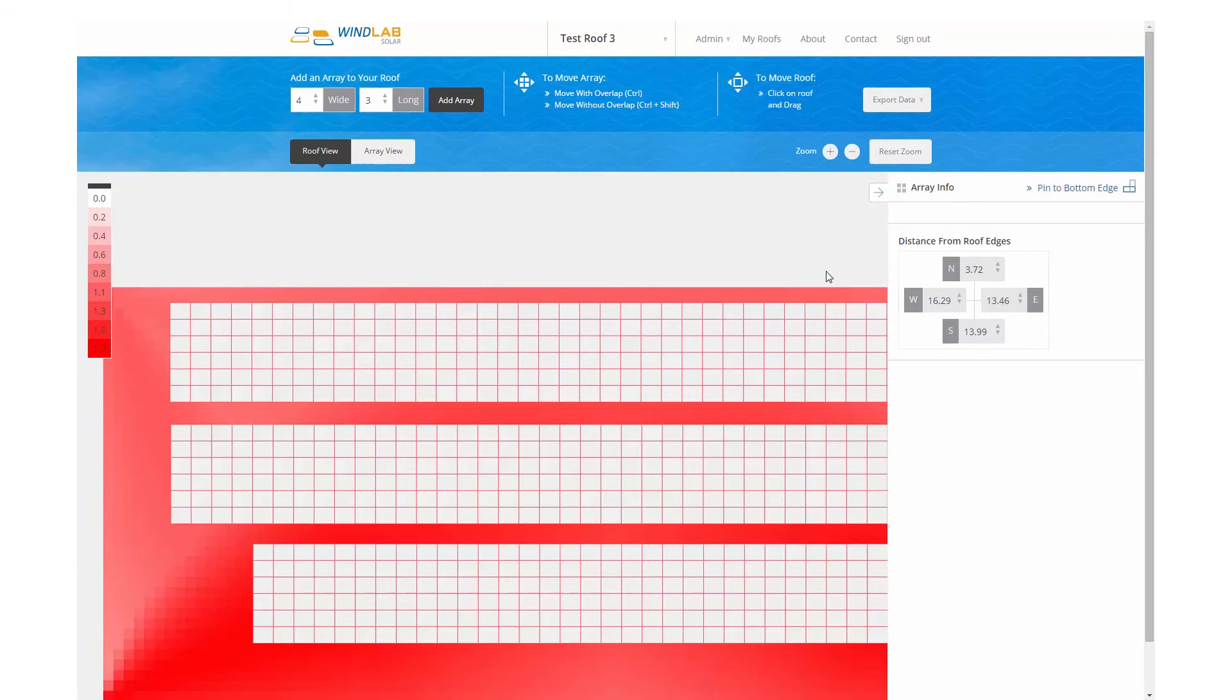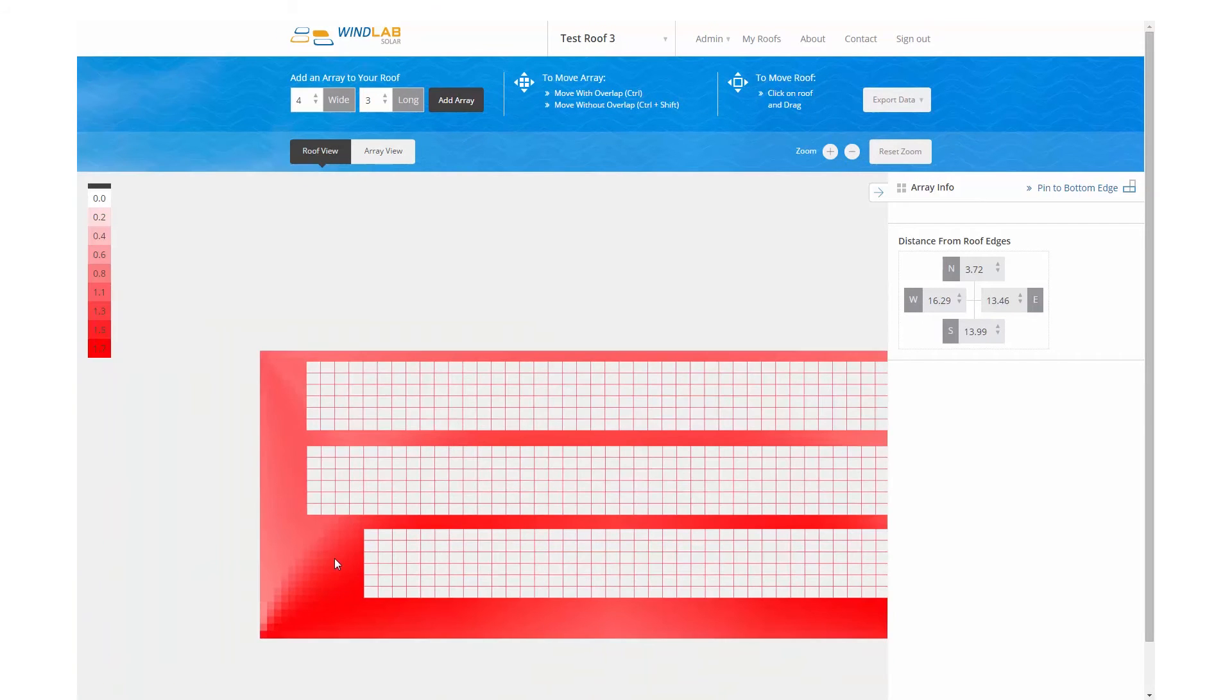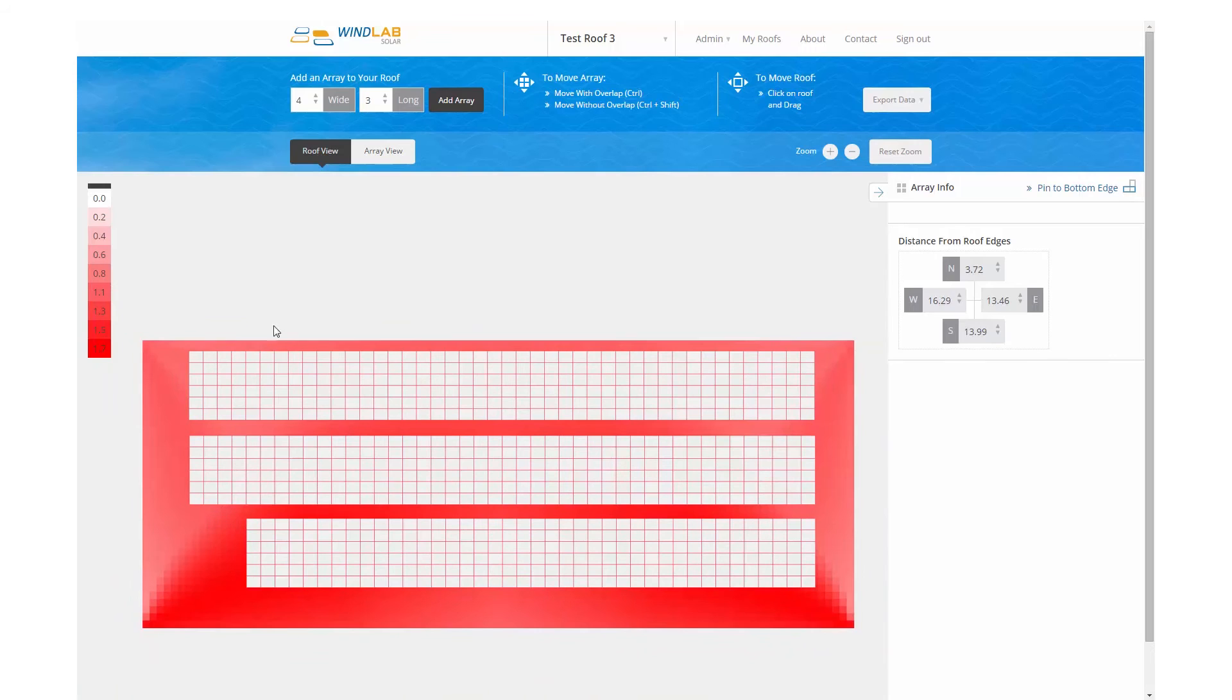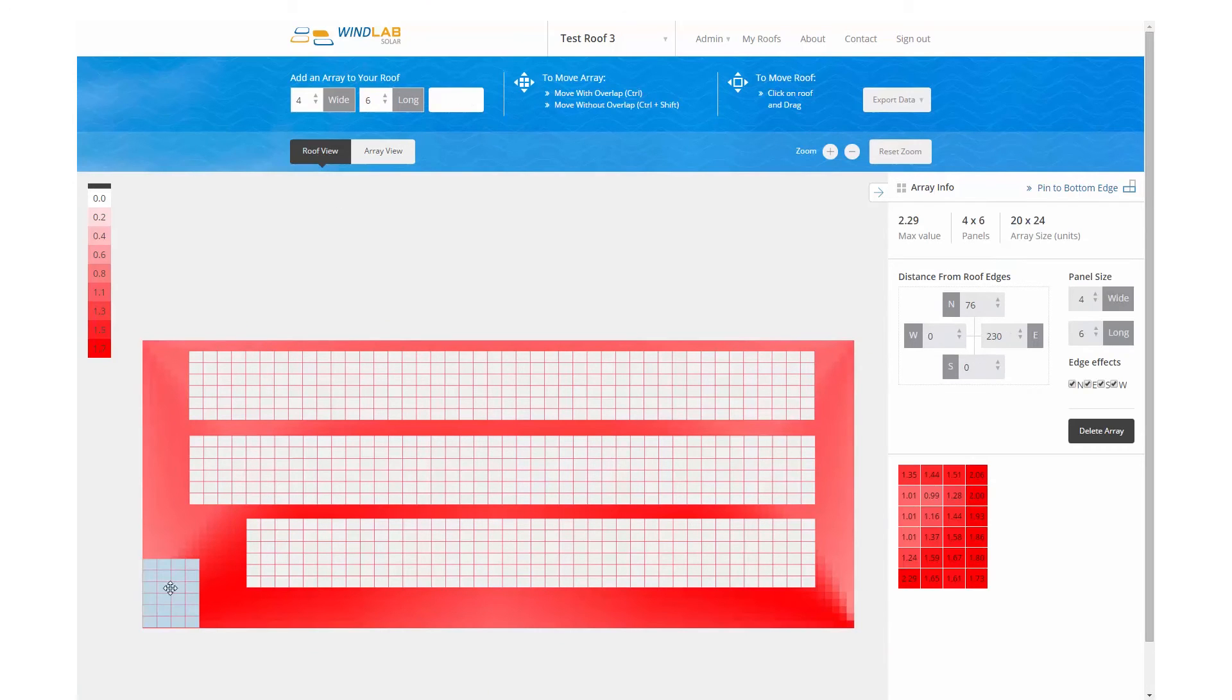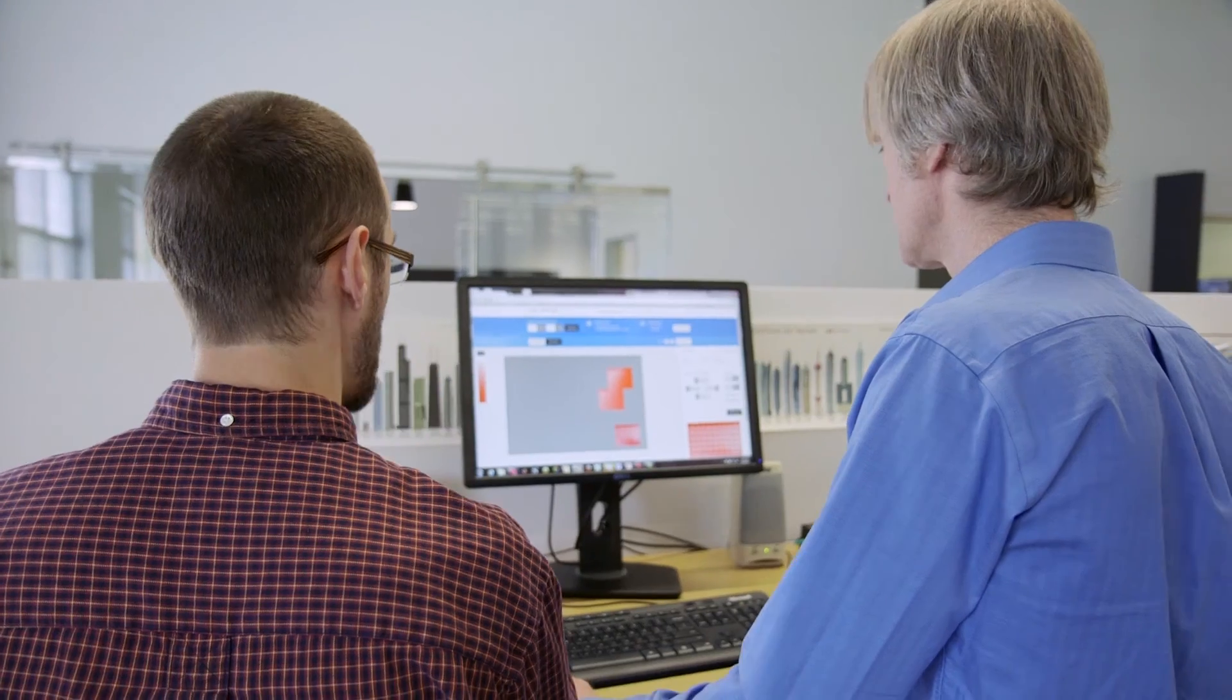Windlab Solar takes all of the rules, all of the knowledge from all of the testing, and puts it into a simple tool where you just place the array on the roof, move it into position, put the next one next to it, and it calculates whether that has affected the loads. Whether you're getting shelter from the row of panels in front of you, whether the parapet is making things worse for you, and it tells you where on the roof you can put the array to minimize the wind loads as well.